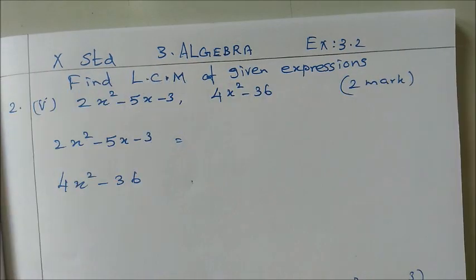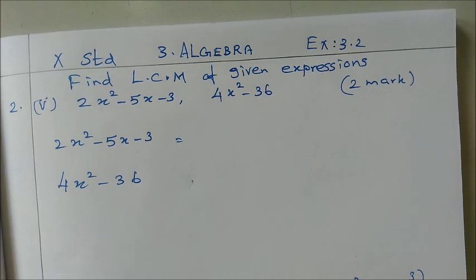This is 10th standard, 3rd unit algebra, exercise 3.2, 2nd sum, 5th subdivision. Find LCM of given expressions: 2x squared minus 5x minus 3 and 4x squared minus 36.